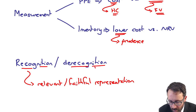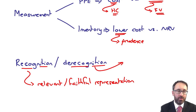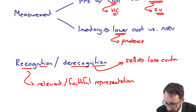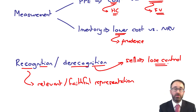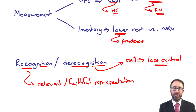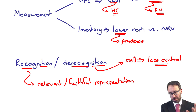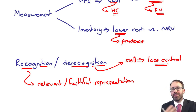For de-recognition: when we sell the asset we de-recognise because we lose control — we've got rid of the resource and therefore we no longer recognise it. There will be a profit or loss on disposal of PPE, and the inventory will be measured as revenue. If you look at the answer at the back, it's written out in a more exam style as opposed to a note style.